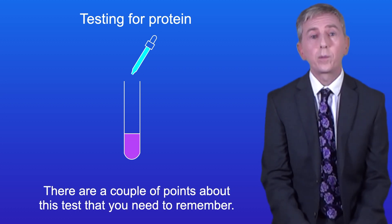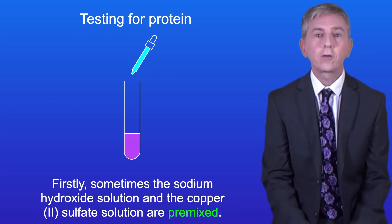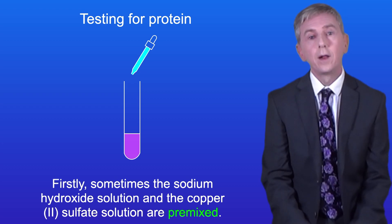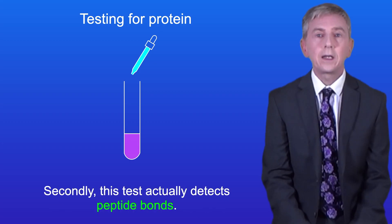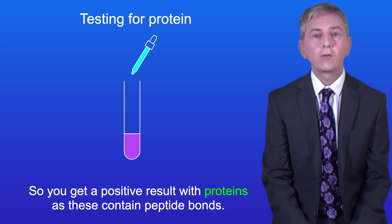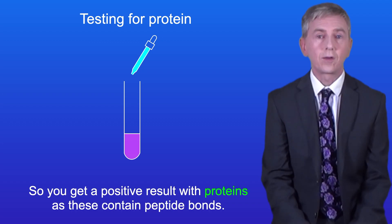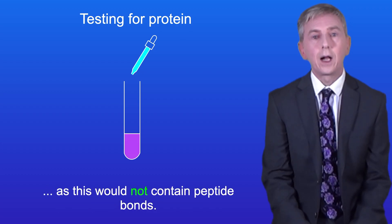There are a couple of points about this test to remember. Firstly, sometimes the sodium hydroxide solution and the copper(II) sulfate solution are pre-mixed — this is called Biuret solution and you may see this in your school. Secondly, this test actually detects peptide bonds, so you get a positive result with proteins as these contain peptide bonds. However a solution of amino acids would give a negative result as this would not contain peptide bonds.